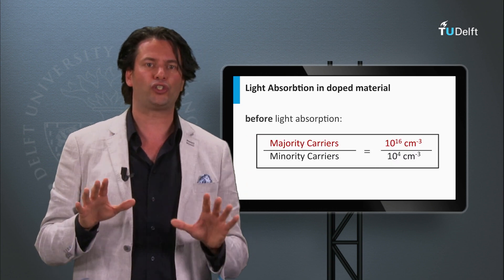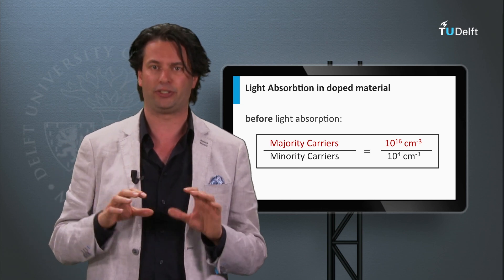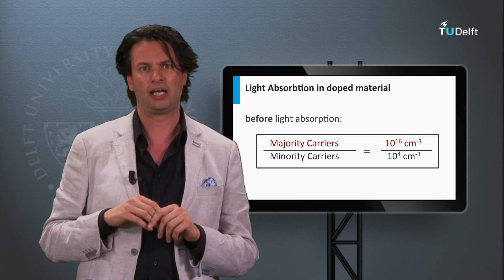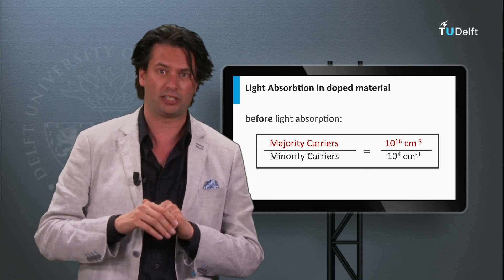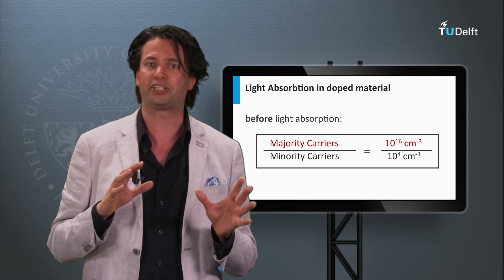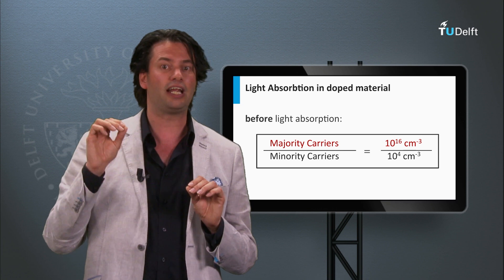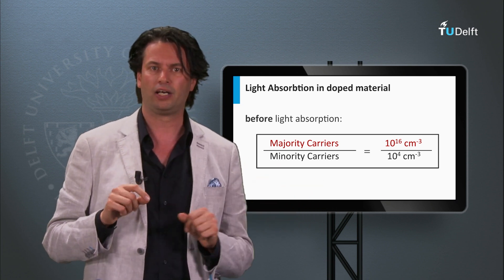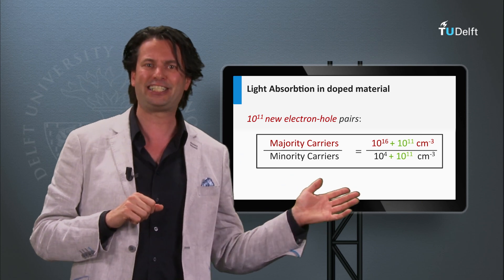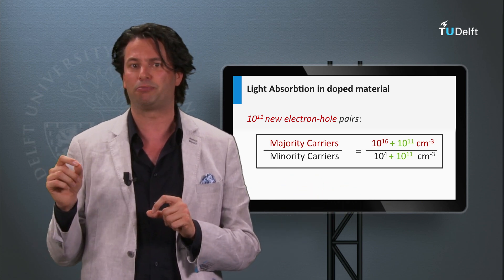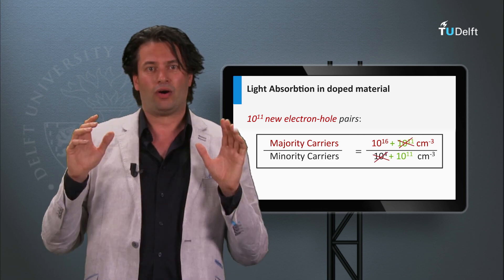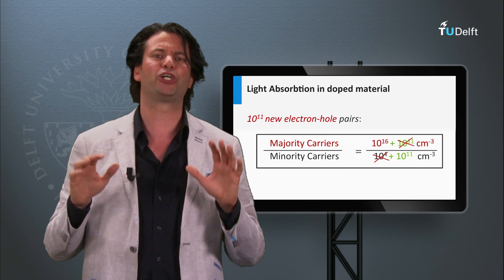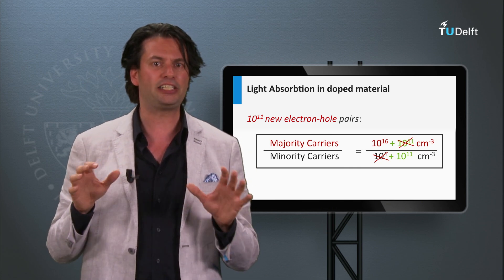Finally, let's discuss how light absorption affects the charge carrier density in doped materials. Consider the situation with a density of majority charge carriers of 10 to the 16th per cubic centimeter and a density of minority charge carriers of 10 to the 4th per cubic centimeter. Now let's assume we generate 10 to the 11th electron-hole pairs per cubic centimeter by light absorption. The majority charge carrier density is not affected, since 10 to the 11th is much smaller than 10 to the 16th. On the other hand, the density of minority charge carriers is drastically affected — 10 to the 11th is much larger than 10 to the 4th, and its density is increased by 7 orders of magnitude.